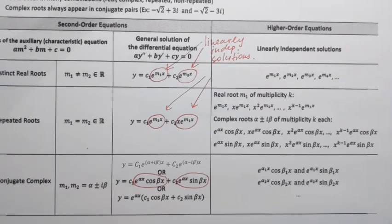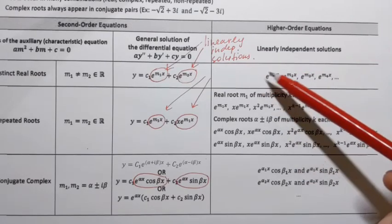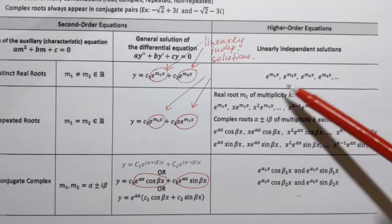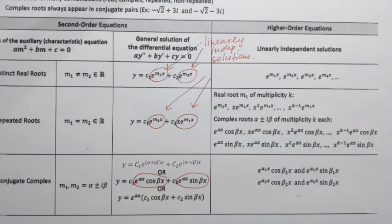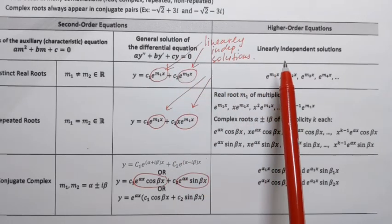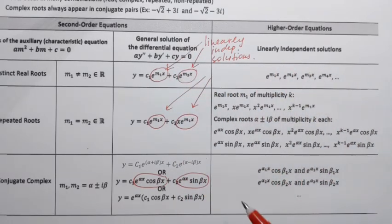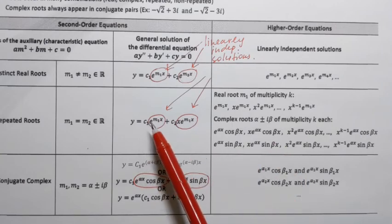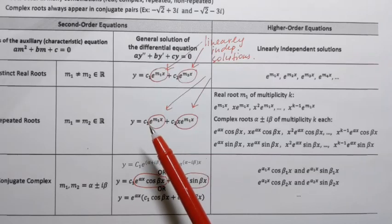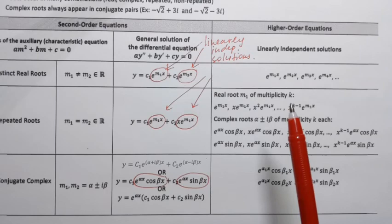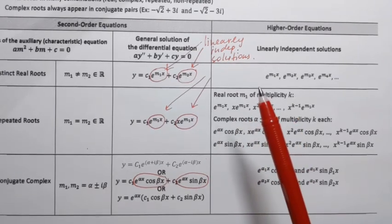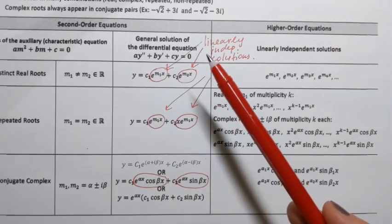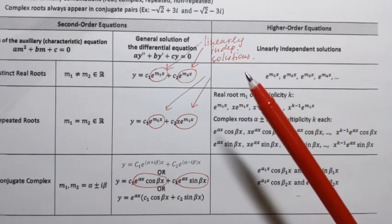The idea is that since an nth degree polynomial equation can have many combinations of roots — real, complex, repeated, non-repeated — you may end up with linearly independent solutions of each kind. Once you obtain all of them, the general solution to the differential equation is formed by creating a linear combination: c1 times the first solution plus c2 times the second, and so on. The number of terms in the general solution equals the order of the differential equation.